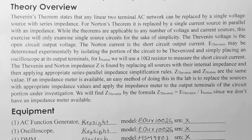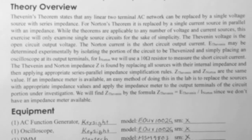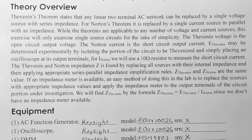Theory overview: Thevenin's theorem states that any linear two-terminal AC network can be replaced by a single voltage source with series impedance. For Norton's theorem, it is replaced by a single current source in parallel with an impedance. While the theorems are applicable to any number of voltage and current sources, this exercise will only examine single-source circuits for simplicity. The Thevenin voltage is the open-circuit output voltage, and the Norton current is the short-circuit output current. The Thevenin and Norton impedance Z is found by replacing all sources with their internal impedance and applying series-parallel impedance simplification rules.